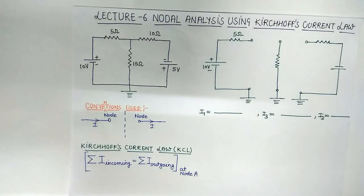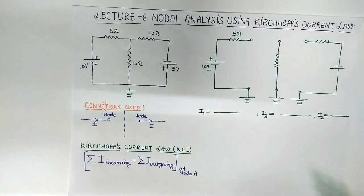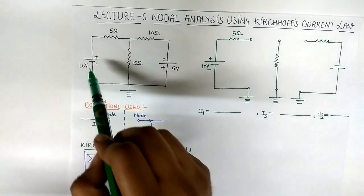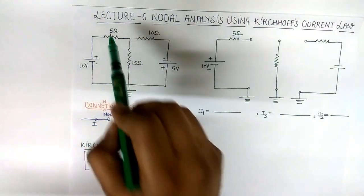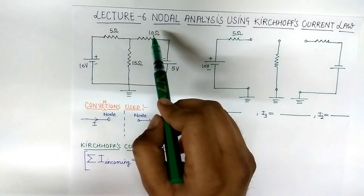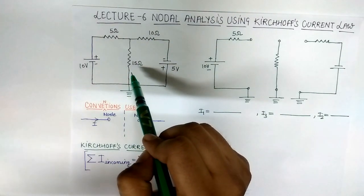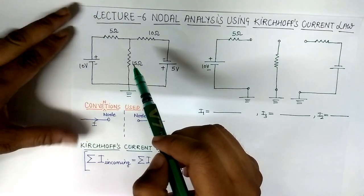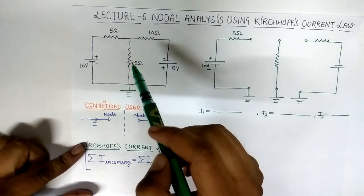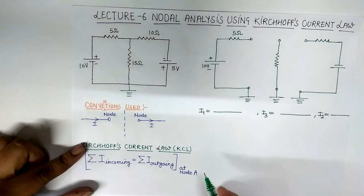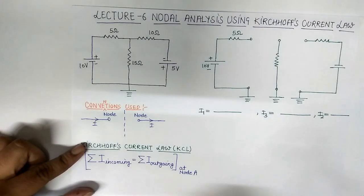Now here this is a problem in which a battery, a resistance, and another battery resistance is connected with a common intermediate branch of 15 ohm. So first of all in nodal analysis we find nodes or junctions.